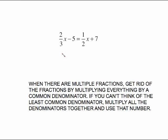Now sometimes you have these equations where you have variables on both sides which you also have fractions to deal with. The bottom line is when you have a lot of fractions to deal with you want to get rid of them in the beginning by multiplying everything by a common denominator. If you can't think of the least common denominator then just multiply the two or three or four denominators together and use that number. In this case the only denominators we have are 2 and 3. 2 times 3 gives me 6 which is the least common denominator.